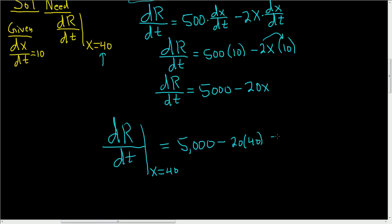and 20 times 40 is 800, so we end up with $4,200.